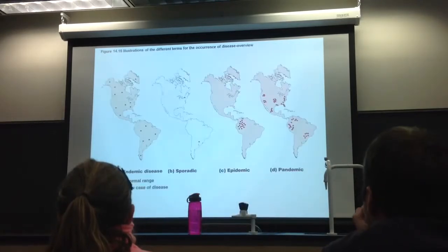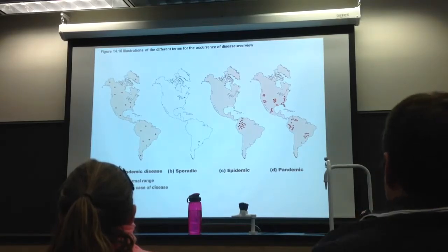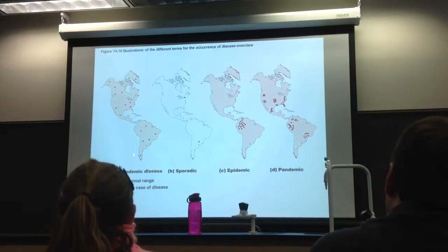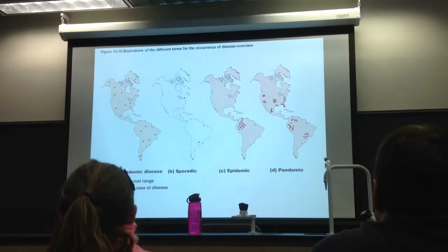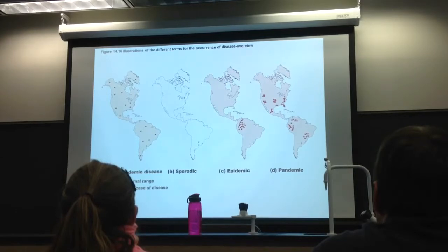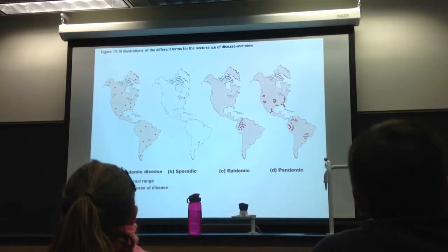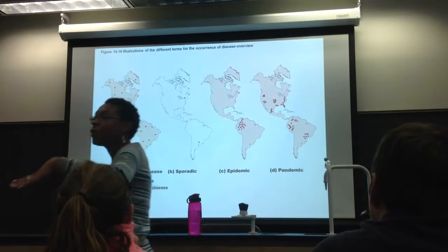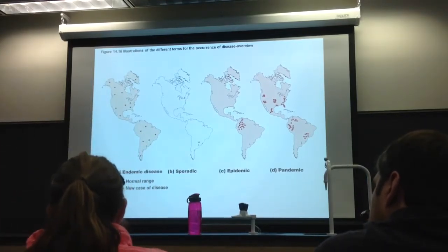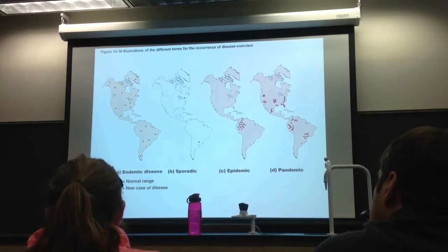These are all epidemiology terms talking about the incidence or prevalence of disease. On the map of the western hemisphere, the shaded region is the normal range and the dots are new cases. When a disease is endemic, it's pretty much always present in that community at low numbers — you can't get rid of it, and there are very few new cases.